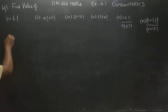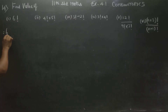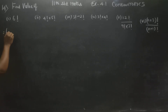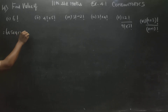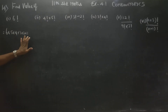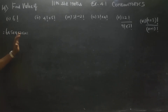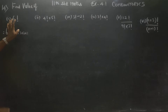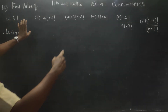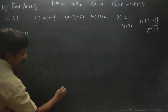First we will start with this. 6 factorial can be written as follows — factorial means you have to start with 6, reduce each term by 1 and end with 1. That is 6, reduce by 1 each time until you reach 1. This is the rule for factorial. What is n factorial? n into n minus 1, n minus 2, n minus 3, dot dot, up to 1. That is the formula.